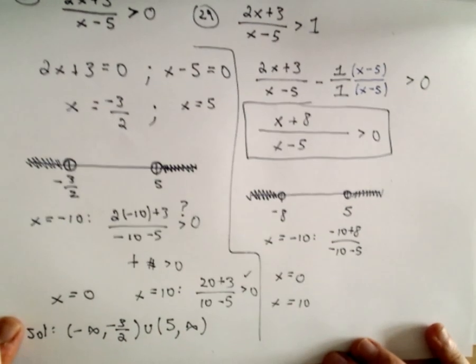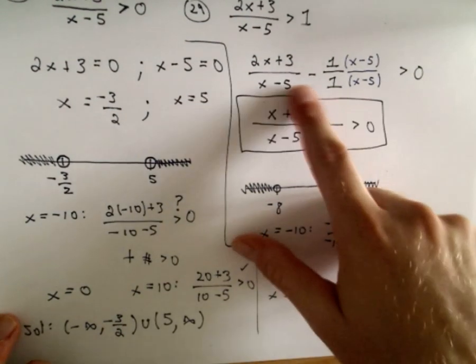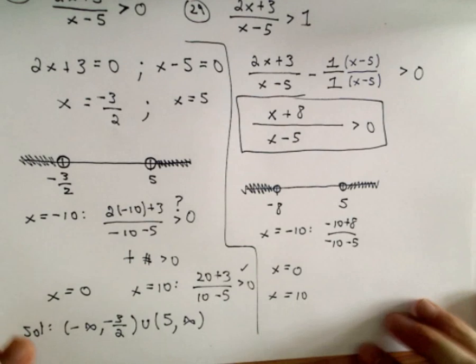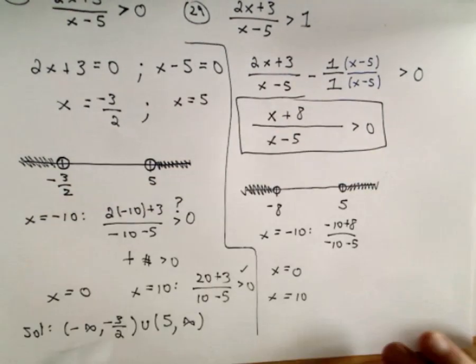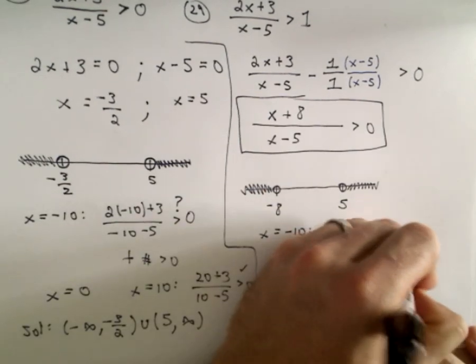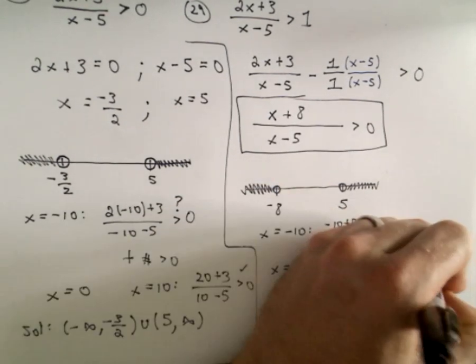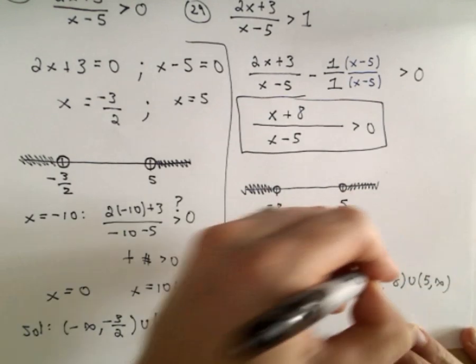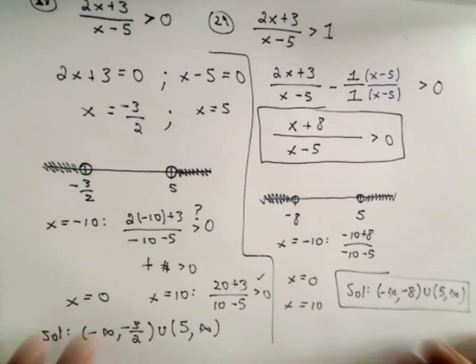So almost the same thing as the last one. The only difference, again, is just getting these, just kind of rewriting it on the left side. So our solution set in this case will be from negative infinity up to negative 8, parentheses, union, from 5 to infinity. And that's it.